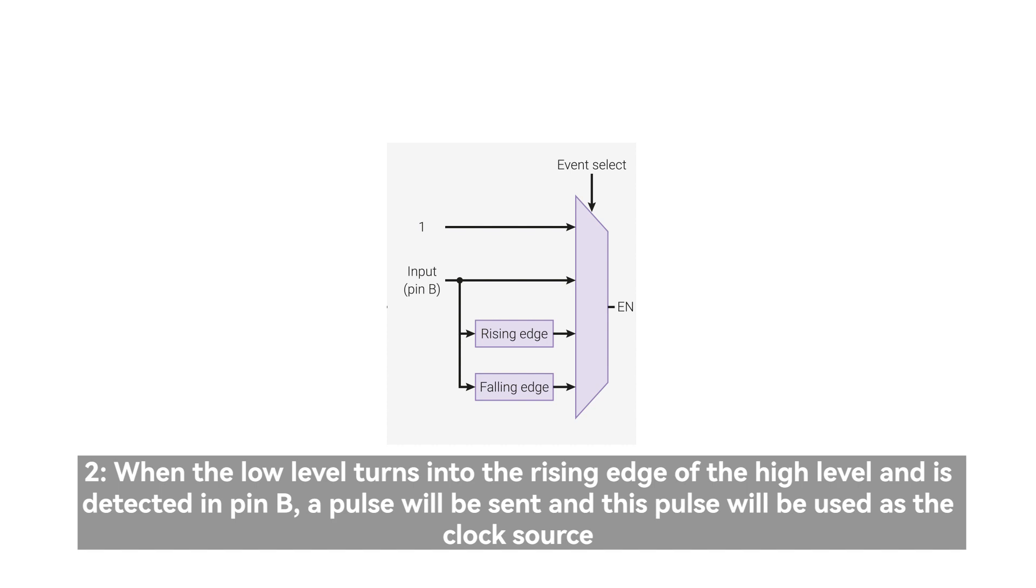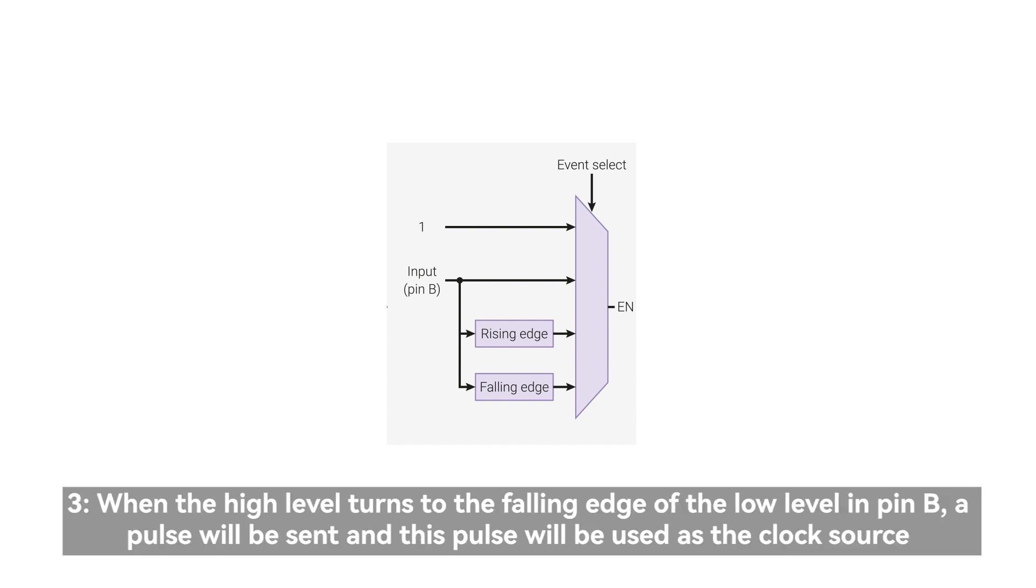Mode 2: when the low level turns into the rising edge of the high level and is detected in pin B, a pulse will be sent and this pulse will be used as the clock source. Mode 3: when the high level turns to the falling edge of the low level in pin B, a pulse will be sent and this pulse will be used as the clock source.